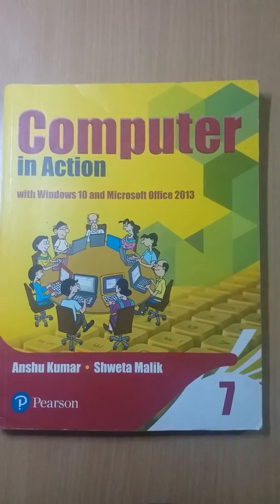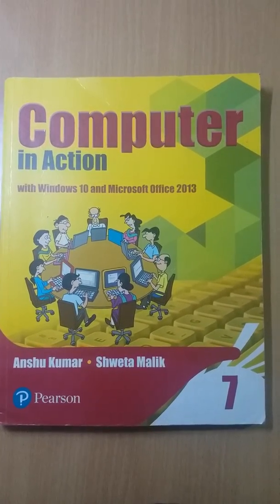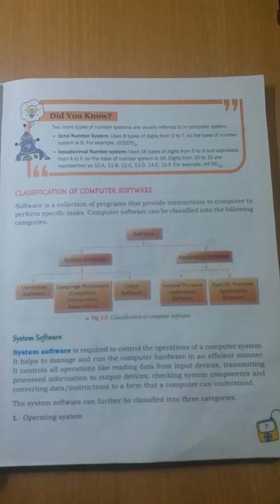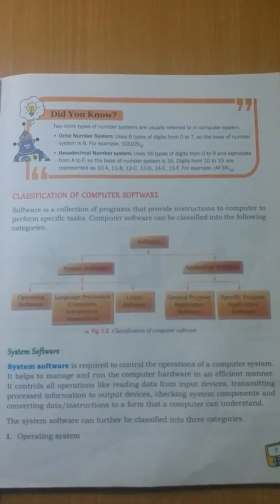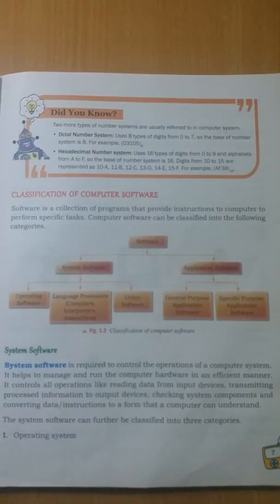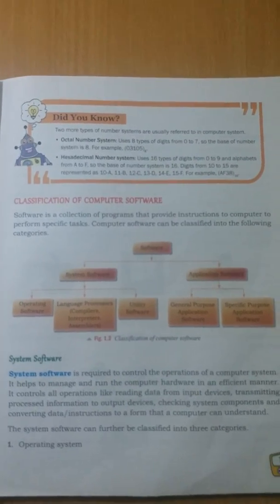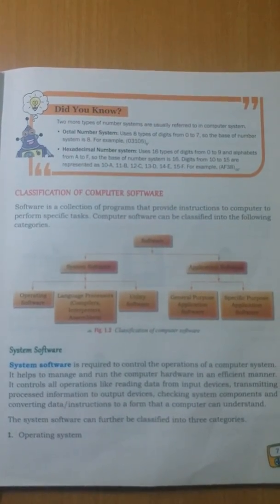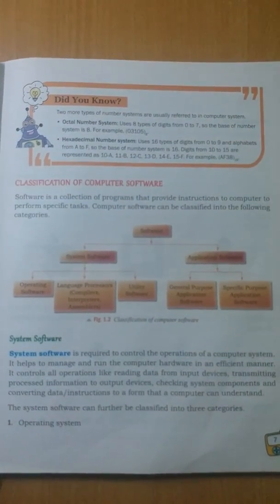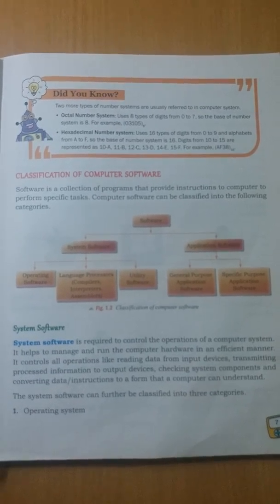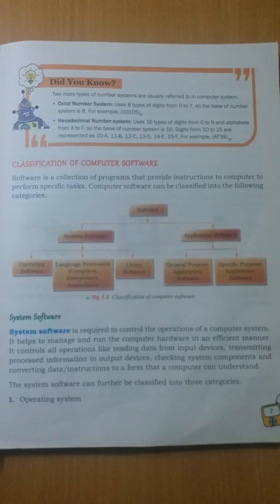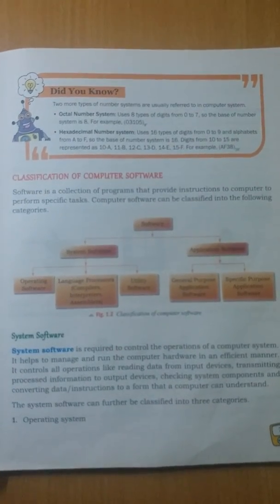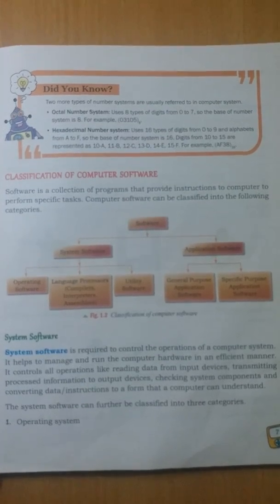Welcome students to the second online session of Class 7th Computers. Today we are going to discuss the classification of computer software. First of all, we must know what computer software is. As you all know, a computer is a dumb device — it cannot perform anything on its own. To perform any function, we have to give instructions to it. The set of instructions we give to the computer to perform any task is known as a program, and the set of programs to achieve a specific goal is known as software.